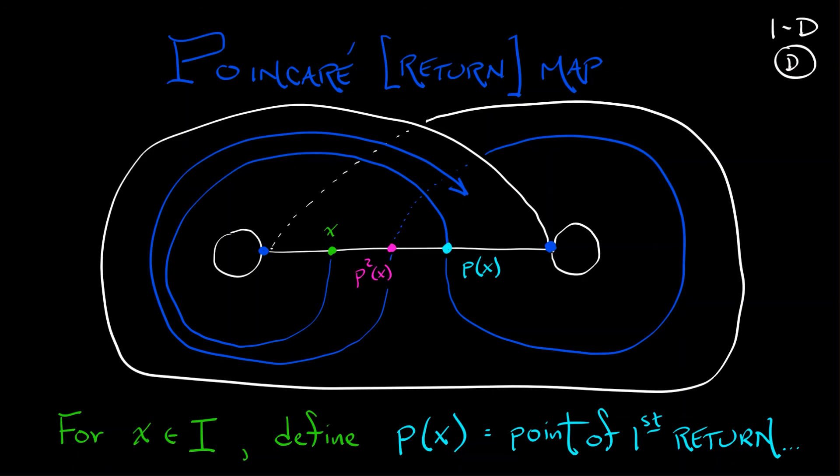Now, everything's great except for that one point that falls into the saddle equilibrium at the origin. That's kind of bad because it never really goes around and hits the branch line again. We're going to say that that point corresponds to the numerical value of one half on the branch line for reasons that you'll see.